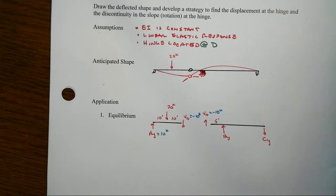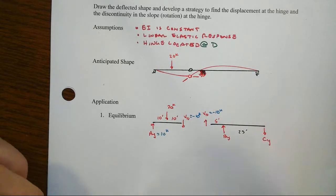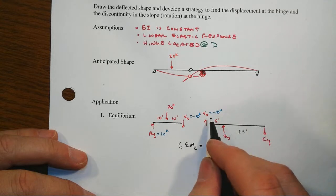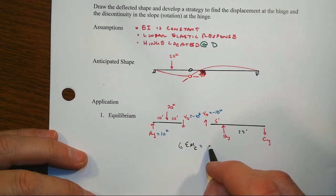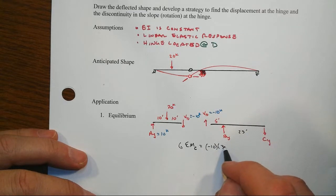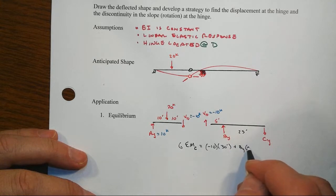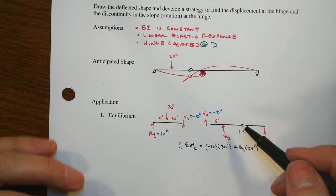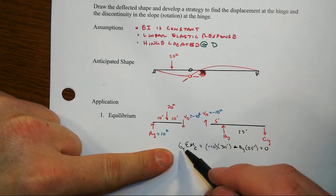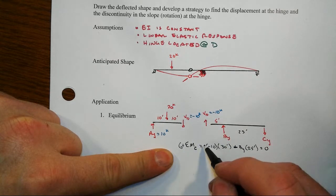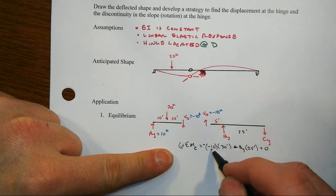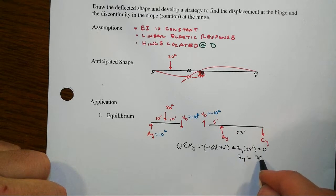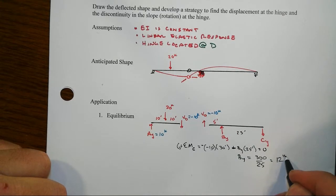And then we've got some moments here, sum of moments about point C. And we'll take then counterclockwise as positive. This is showing acting up. So that's VD or a minus 10 times then 30 feet and then plus BY times 25 feet. That's minus, isn't it? Is equal to zero. Now we've got a lot of minuses flipping around here. I'm a little confused myself about what's going on here. I took counterclockwise is positive. That's going the opposite so that should be a minus times then what turns out to be a minus 10 times 30 feet. That makes more sense. And now BY is going to be equal to 300 over 25 and that should be equal then to 12 kips. Let's just check it real quick. 12 kips.